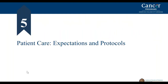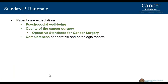Standard Chapter 5 involves patient care expectations and protocols. Patient care expectations involve psychosocial well-being, the quality of cancer surgery provided at the institution — this is a new standard on operative standards for cancer surgery — and completeness of operative and pathology reports.